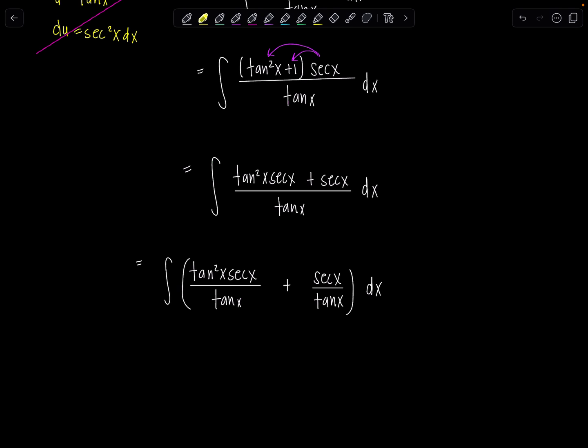So I'm going to write this as tan squared x secant x over tan x plus secant x over tan x dx. And then now look, things are going to fall into place so nicely. So here, tangent from the denominator cancels with one of the tangents up top. Beautiful. I'm really excited because tan x secant x, I know that antiderivative, right? It's just secant x.